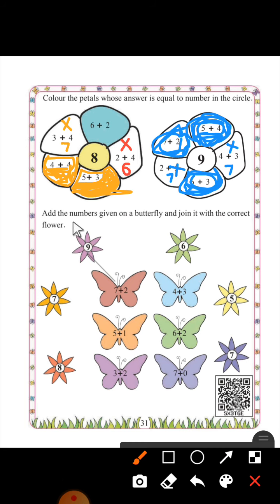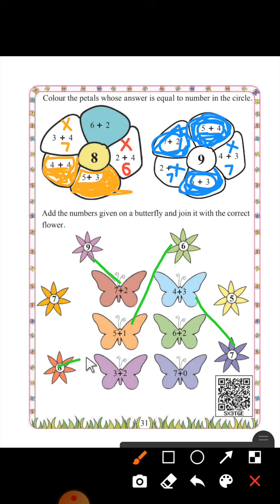Next, add the numbers given on a butterfly and join it with the correct answer. Seven plus two is equal to nine — join this. Four plus three is equal to seven — join this. Five plus one is equal to six — joined with this flower. Six plus two is equal to eight — match with this flower. Three plus two is equal to five — match with five. Seven plus zero is equal to seven — match with seven.